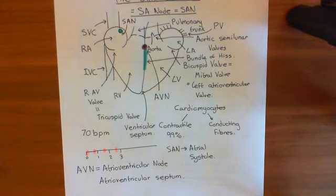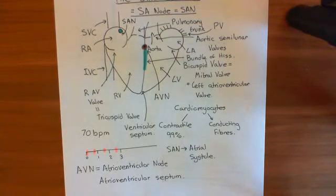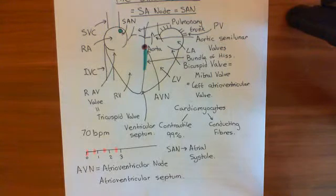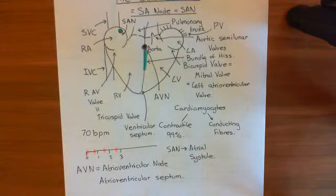The action potential from the sinoatrial node has spread down the atrial contractile cardiomyocytes and has caused atrial systole. It's then reached the atrioventricular septum, past which it cannot propagate, and it's then gone through this septum via the atrioventricular node, which is very, very slow to conduct the action potential across, to give time for the atria to eject their blood into the ventricles.